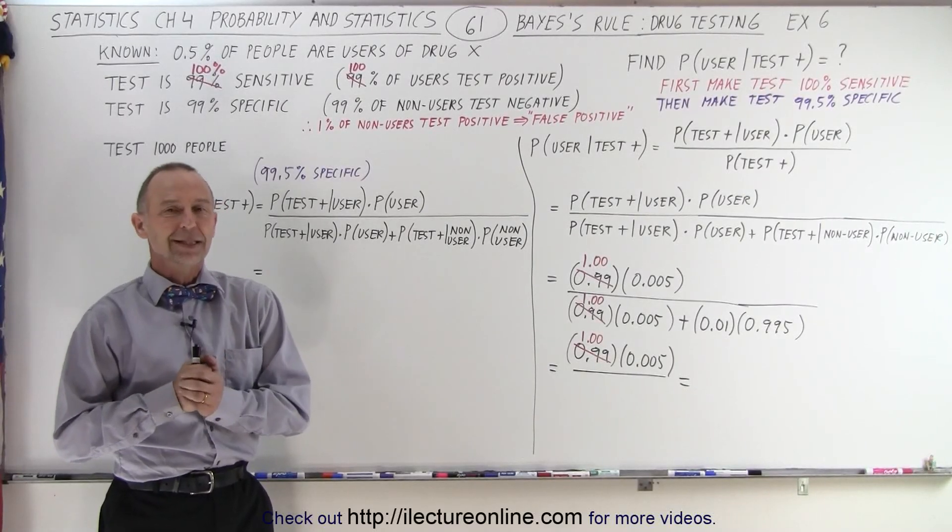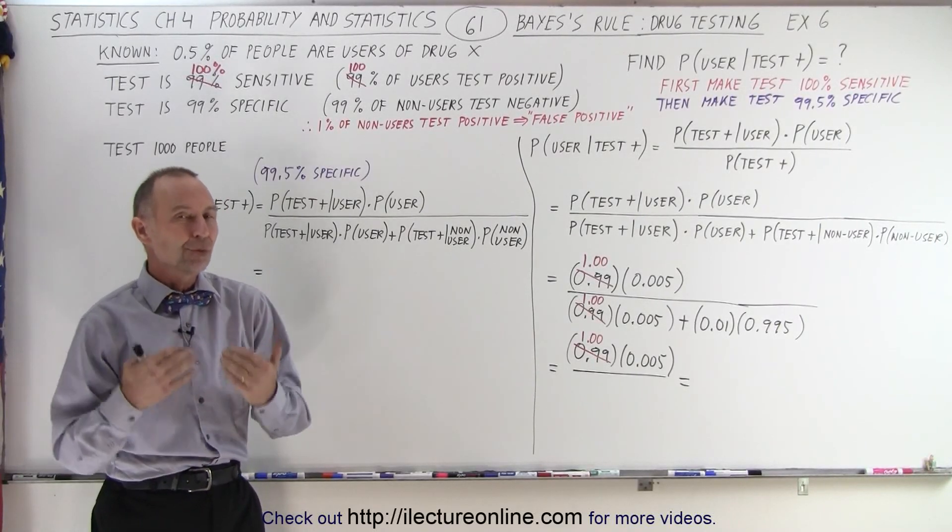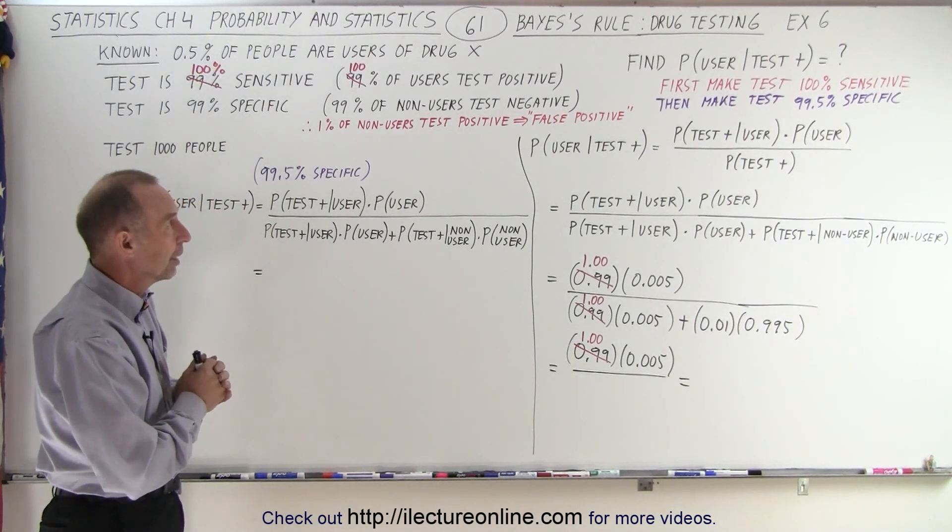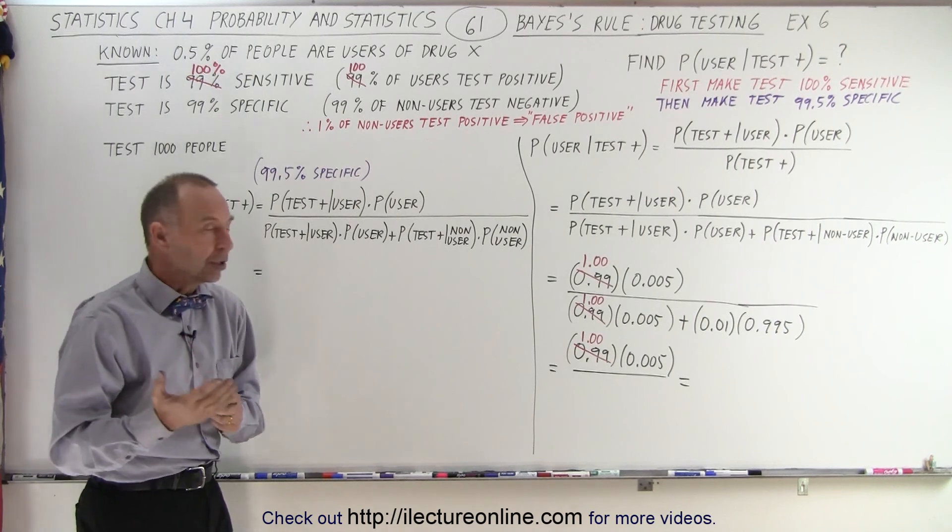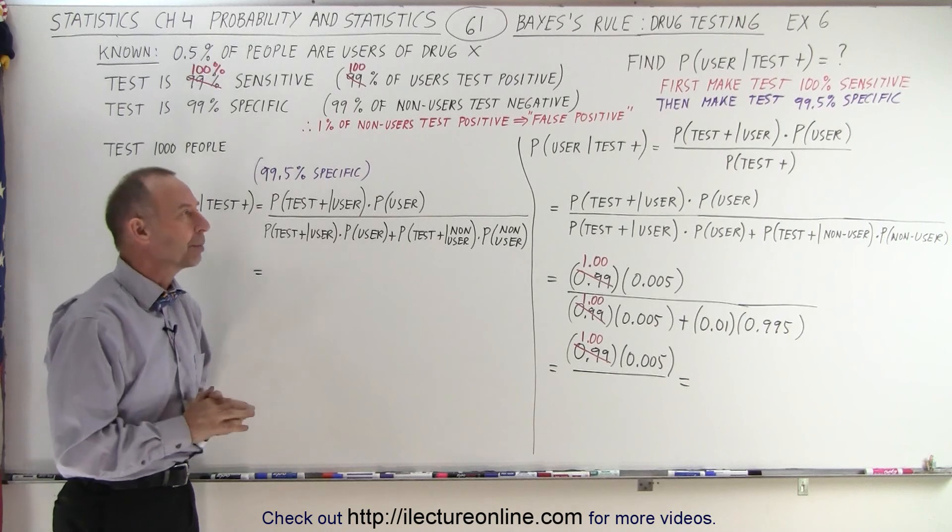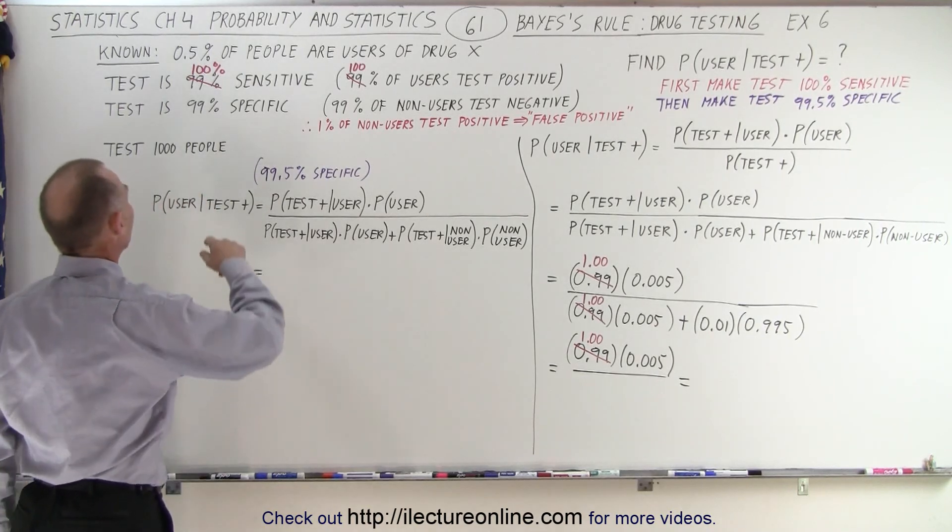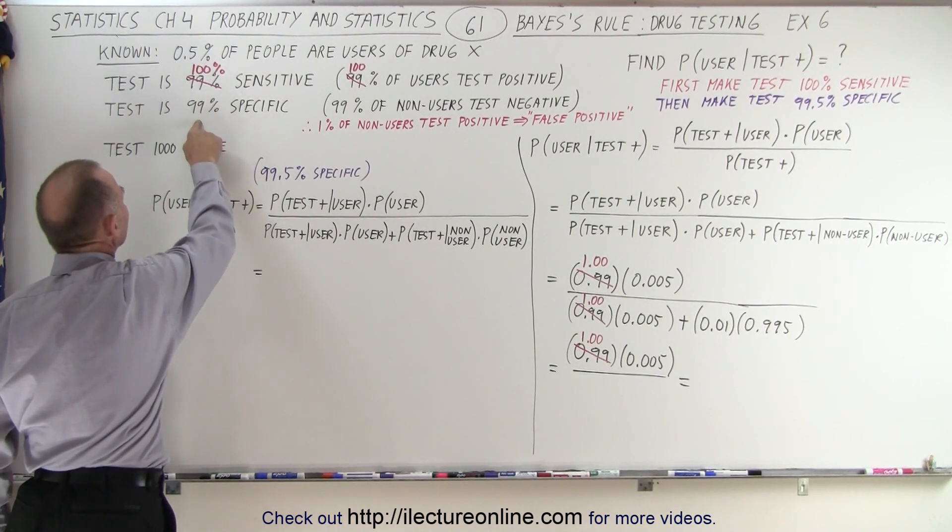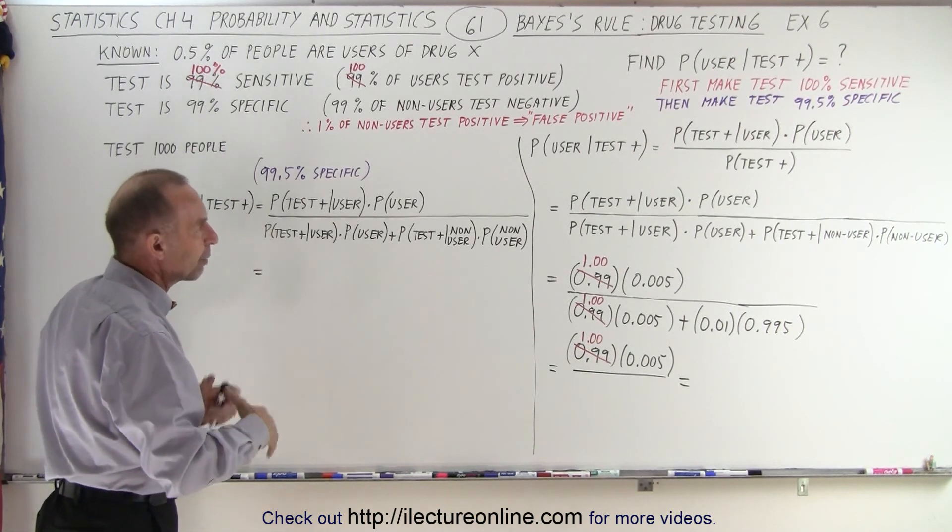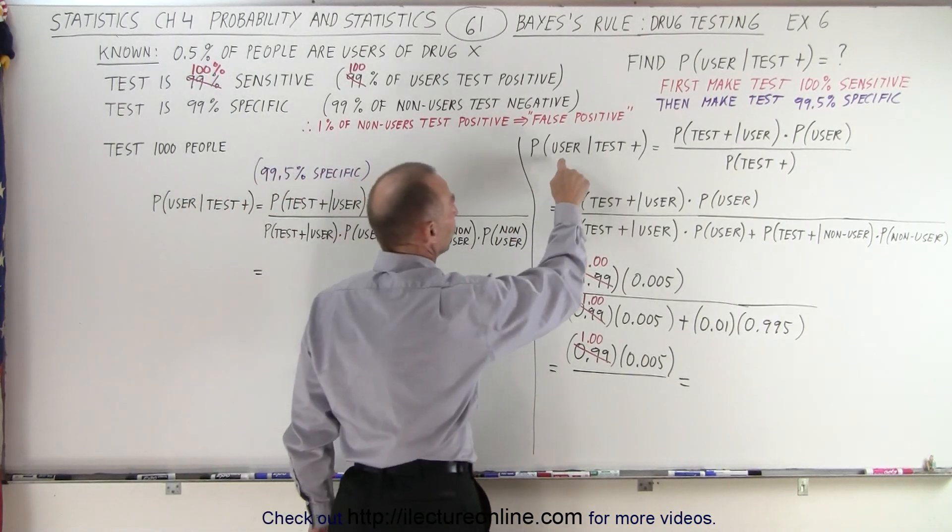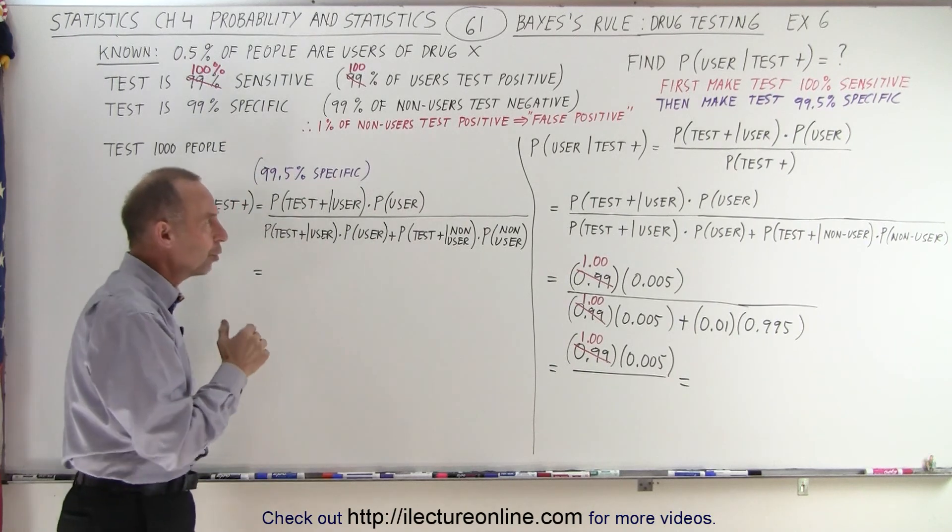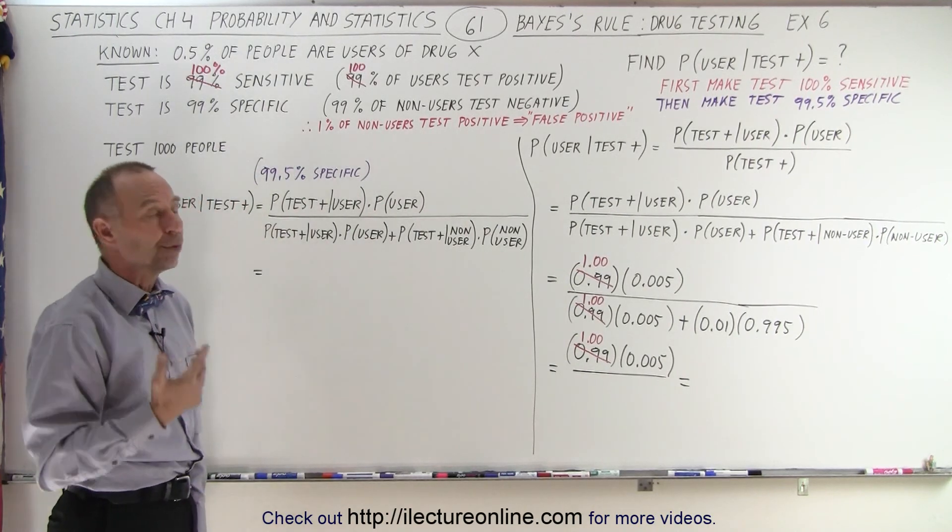Welcome to our lecture online. Now let's see how we can improve this drug test that we showed how that worked on the previous video. Notice that we had a drug called drug X that had about a 0.5% usage of the general population. The drug test had a 99% sensitivity and a 99% specificity. And we noticed that when we worked it out, the probability that the person was a user if they tested positive was about 33%. So the question was, what will improve the test?